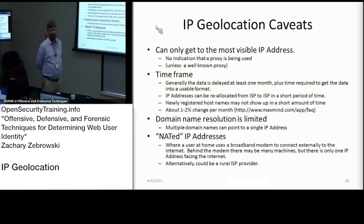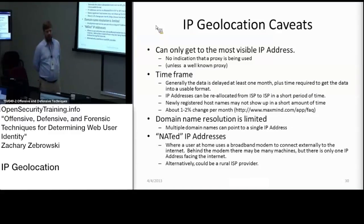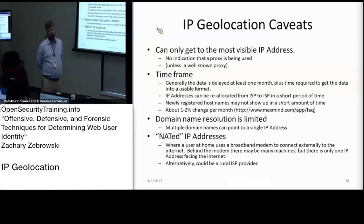Domain name resolution is limited. Basically they try to look at what domain name is associated with an IP address — that would generally be aol.com or mitre.org. But they'll only get you to the aol.com or mitre.org level, not www.mitre.org. NAT'd IP addresses might also be an issue. If a user is using a broadband connection, they'll be using their own IP address range behind a router. So you could have someone SSH'd into that network and they'll be coming out of that location instead of where they actually are. That's basically how you can cheat IP geolocation.